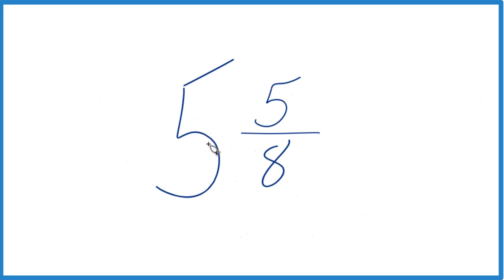We take the whole number, 5, multiply that by 8. 5 times 8 is 40, then we add that to the numerator, 5.